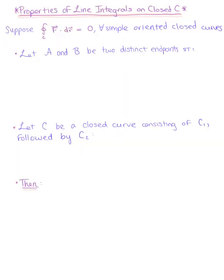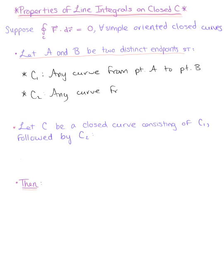A similar argument can be made in the opposing direction. Keeping in mind that the line integral of a conservative vector field over a closed curve is zero, we let A and B be two distinct endpoints such that C sub 1 is any curve from point A to point B, and C sub 2 is any curve from point B to point A. We can then establish an orientation for a full curve C defined by pieces C sub 1 and C sub 2.